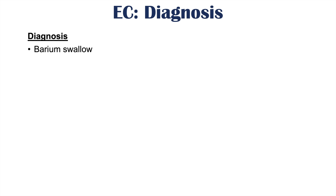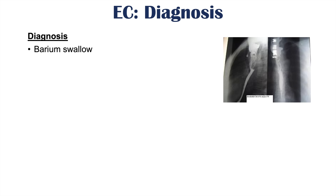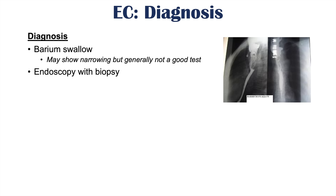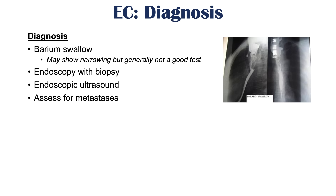Esophageal cancer is diagnosed by several mechanisms. Barium swallow — where the patient swallows barium and imaging is performed — may show narrowing of the esophagus, though it is not typically the preferred test. The best method is endoscopy with biopsy. Additional tests include endoscopic ultrasound and imaging modalities such as CT scan, bone scan, or PET scan to assess for metastases.